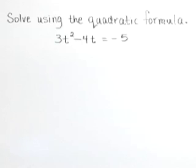Solve using the quadratic formula. The equation 3t squared minus 4t is equal to negative 5.